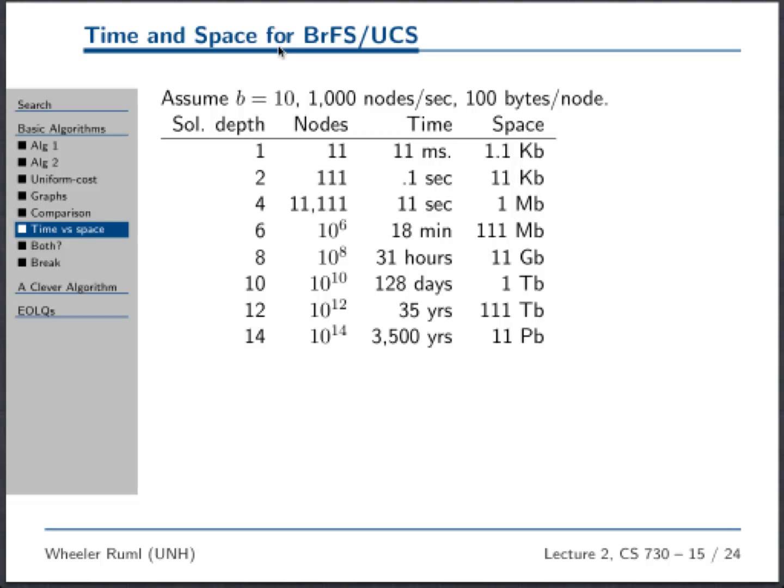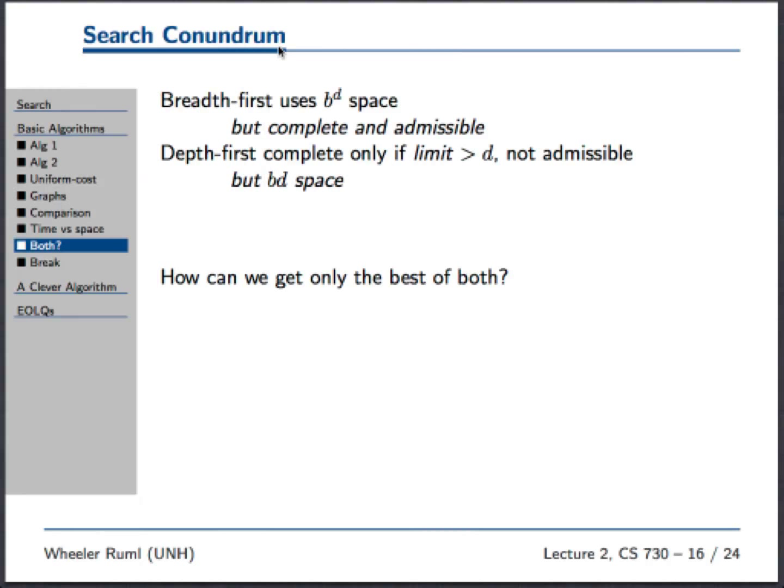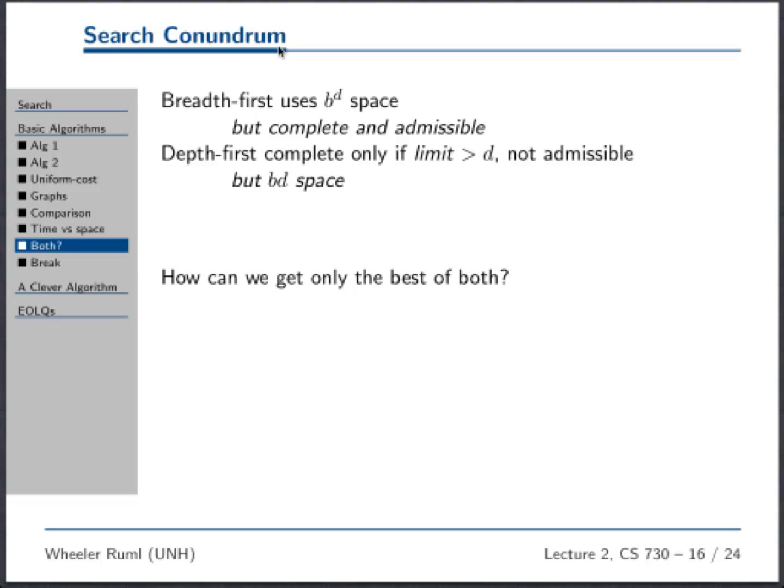We've got breadth-first search that's complete and admissible, which is awesome. And we've got depth-first search, which totally sucks. It's not admissible, it's not complete, but it's linear space. How can we get the completeness and admissibility of breadth-first search and the linear space of depth-first search? Is there something where you iteratively increase b or something like that? Say more.